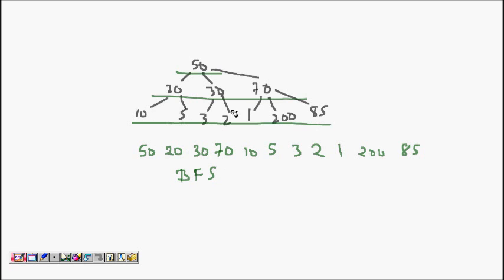I am exploring the graph in a breadth-wise manner — going one complete level, then scanning and going to the next complete level. You can see this is very different from in-order, pre-order, or post-order traversal. So the question is: how do you write code that will perform this?